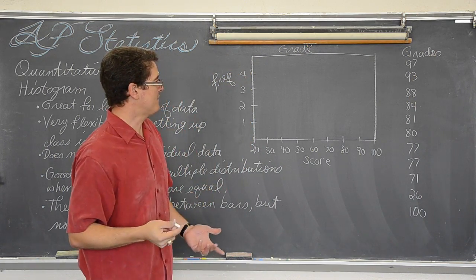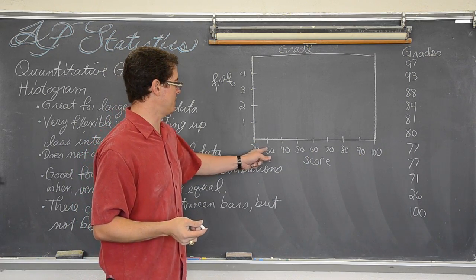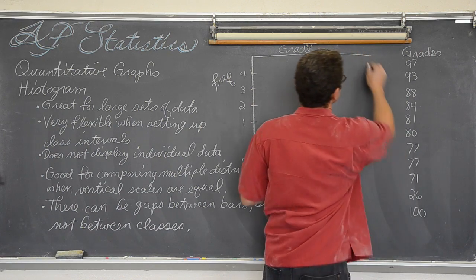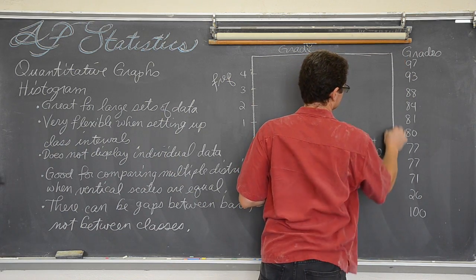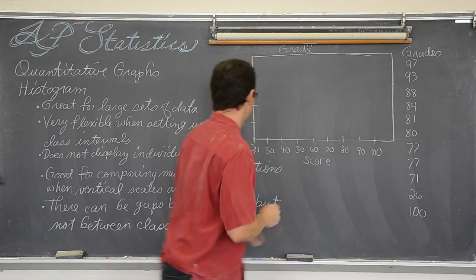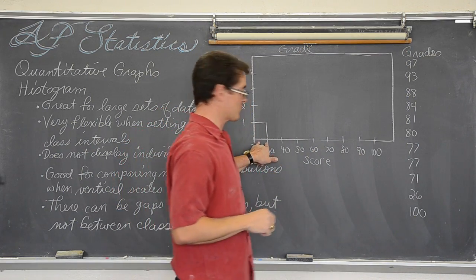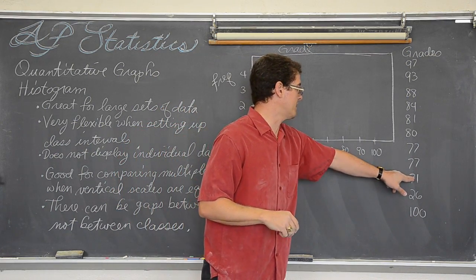Okay, so we have, how many kids score between twenty and thirty? Well that was at twenty-six. Okay, so we had one kid score twenty-six. Between the twenty and thirty we had a couple of kids, one, two, three.